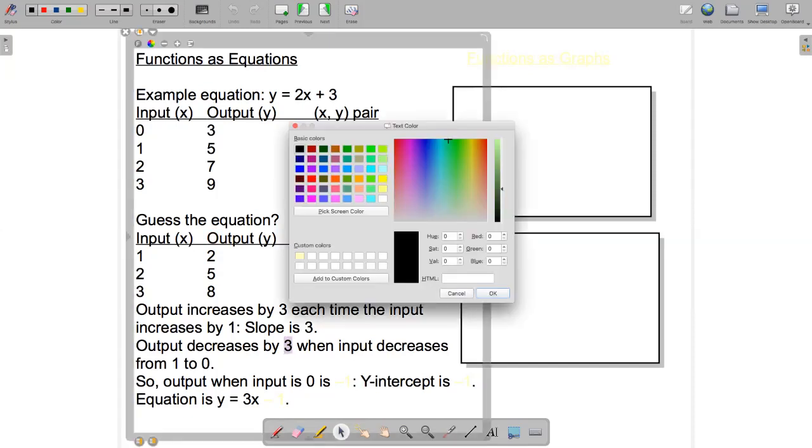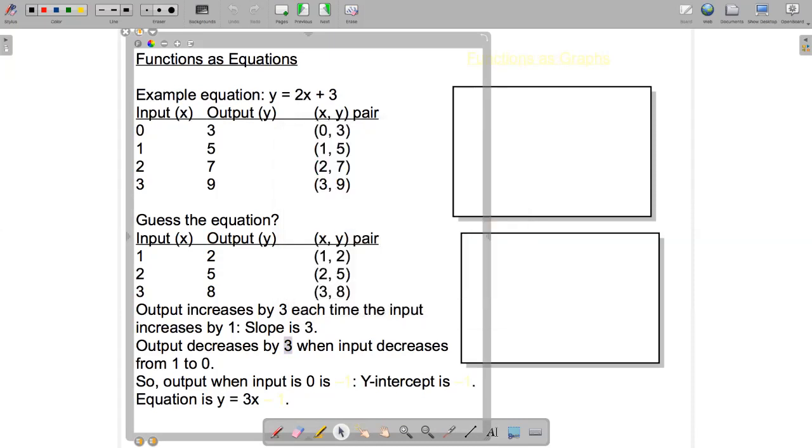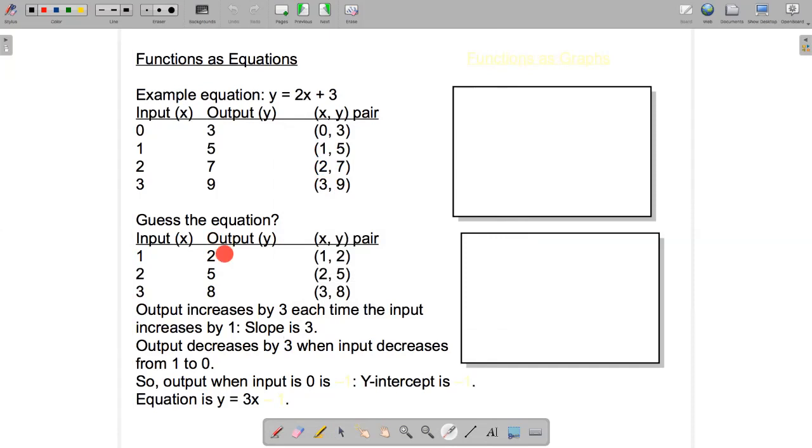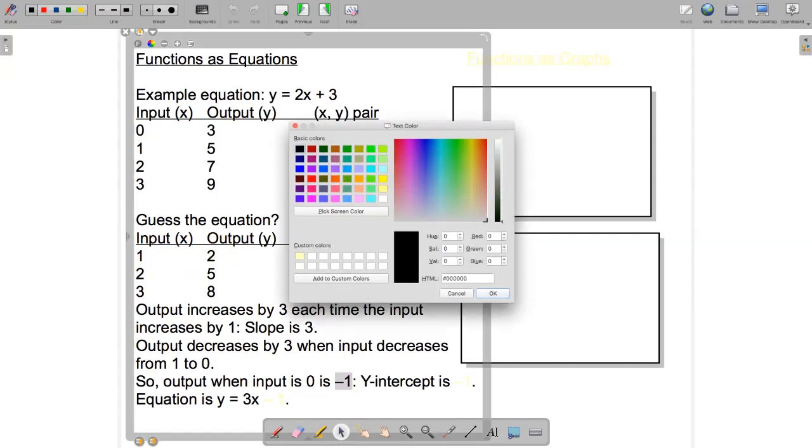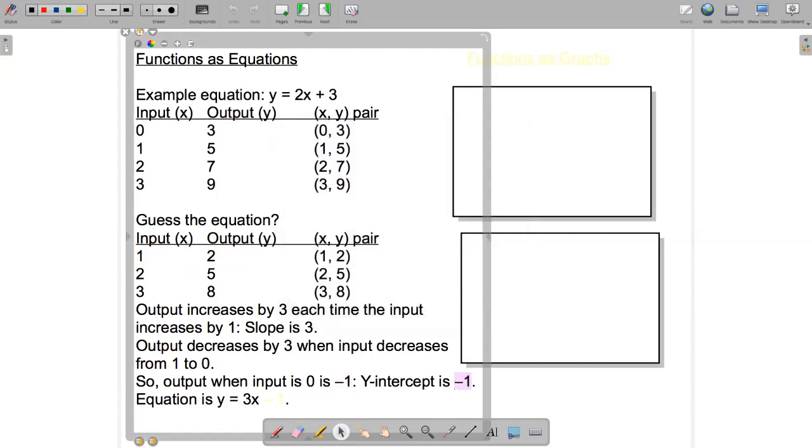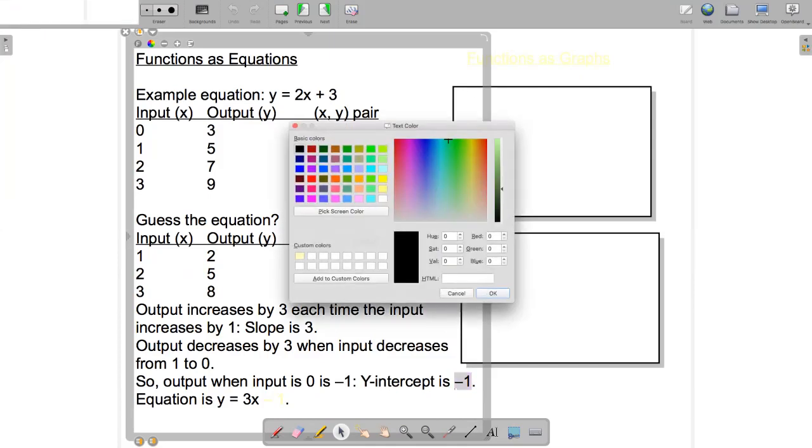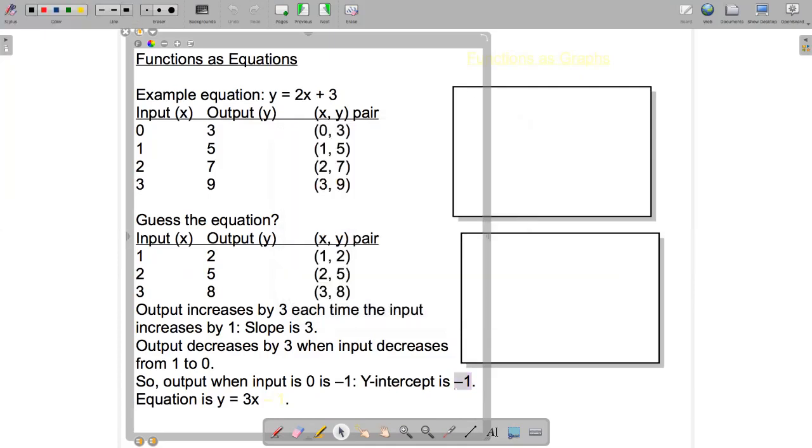Our output will decrease by the slope when the input goes down from 1 to 0. The output was 2 when the input was 1, so if the input goes down to 0, the output will go down by 3 to minus 1. And this is known as the y-intercept. It's the value of y when the input is 0, and it's the number in the equation right here.